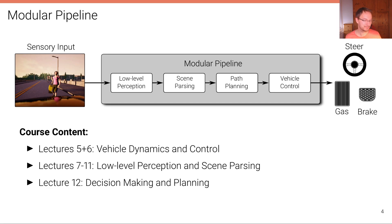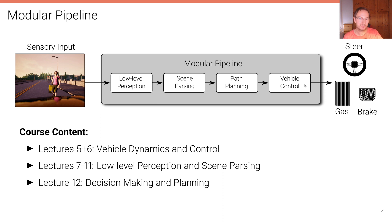Let's start with the introduction. This is a slide we have seen before — the simplified self-driving pipeline with four modules: low-level perception, the scene parsing module, the path planning module, and the vehicle control module. In lectures 5 and 6 we discussed vehicle control, and in lectures 5 to 11 the low-level perception and scene parsing part. Now we're going to discuss the connection from perception to control, which is the decision making and path planning stage.